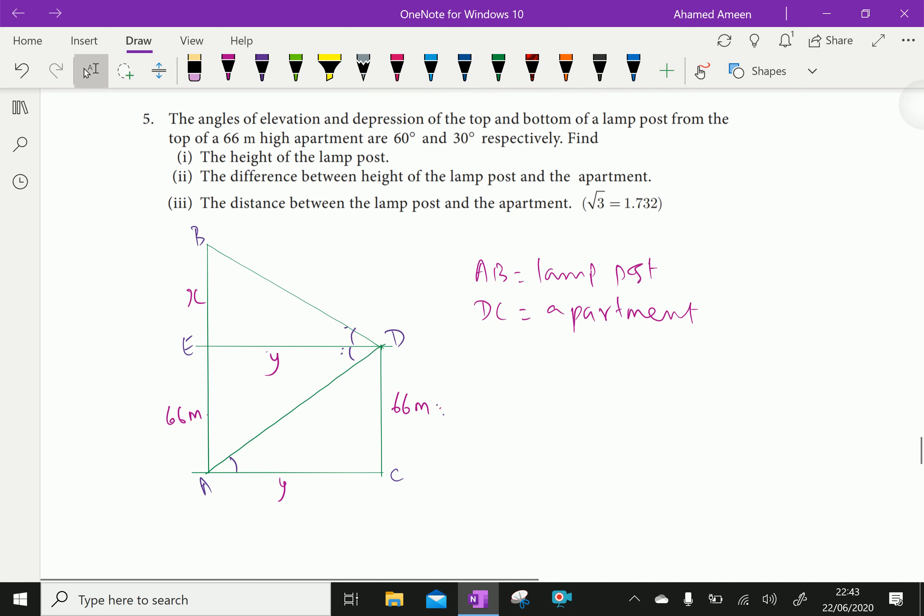Now in triangle BDC, the elevation is 30 degrees. First here 60 degrees. That means elevation of the top of the lamp post from the top of the apartment is 60 degrees. So this 60 degrees appears here also. Here 30 degrees. The angle of depression from the top of the apartment to the bottom of the lamp post is 30 degrees, so here also 30 degrees.